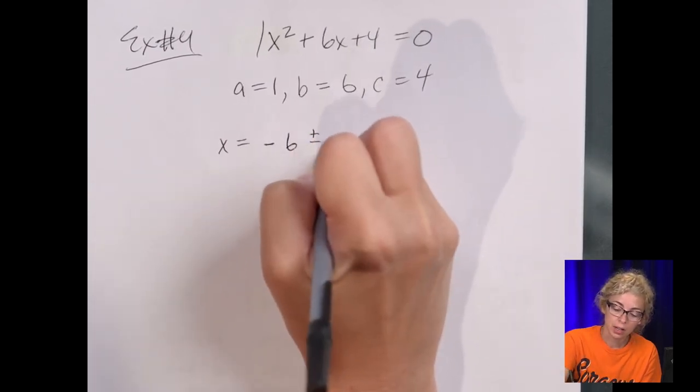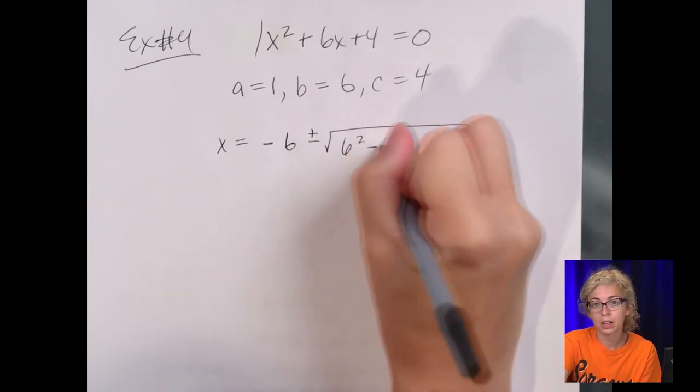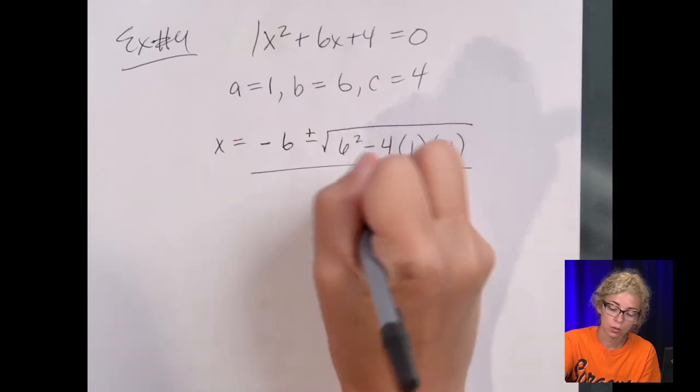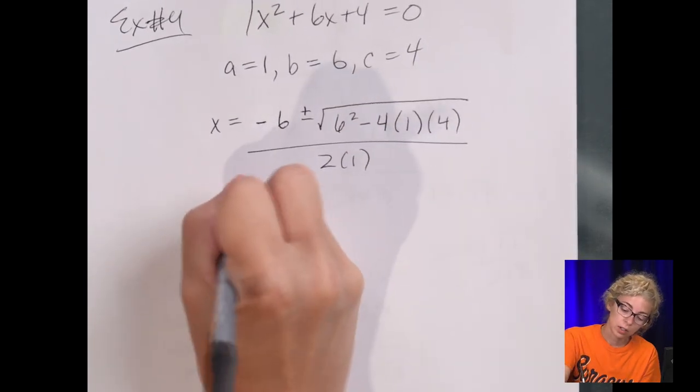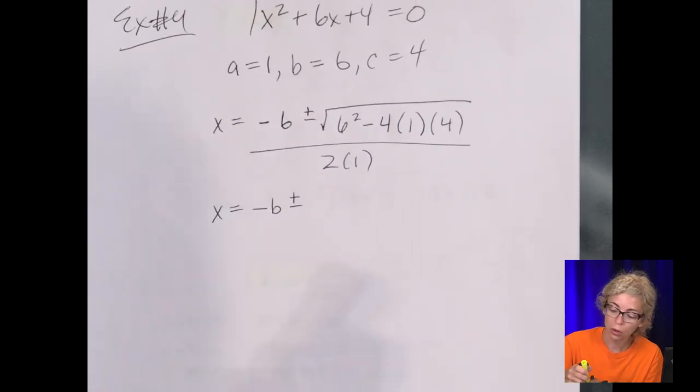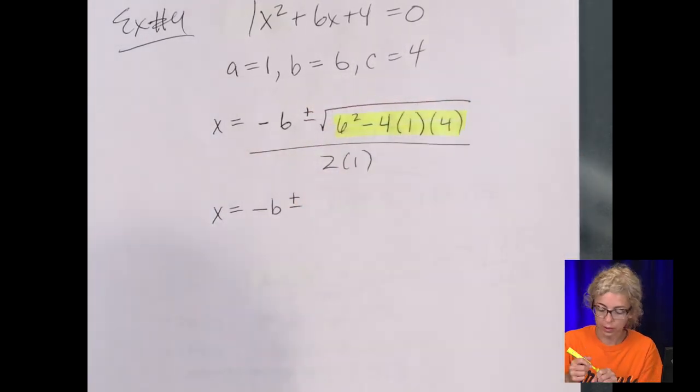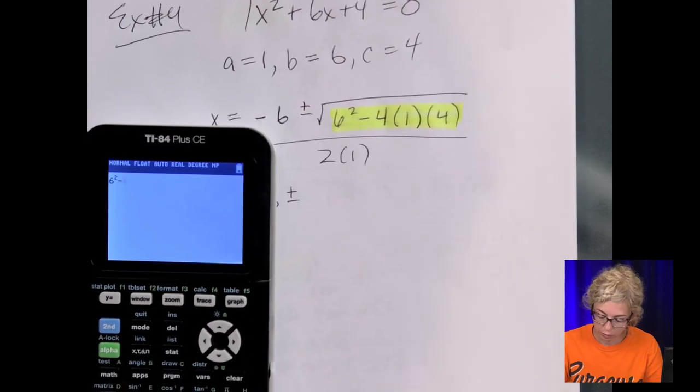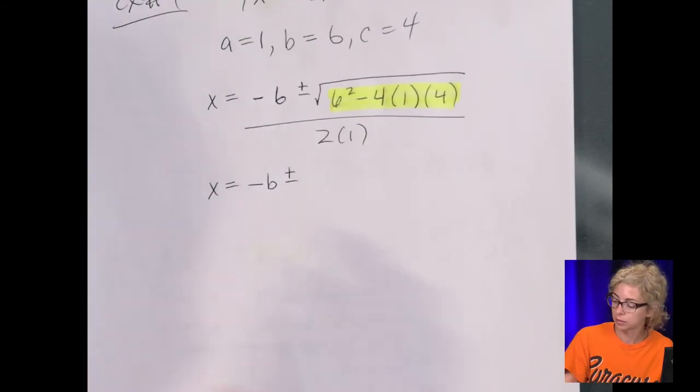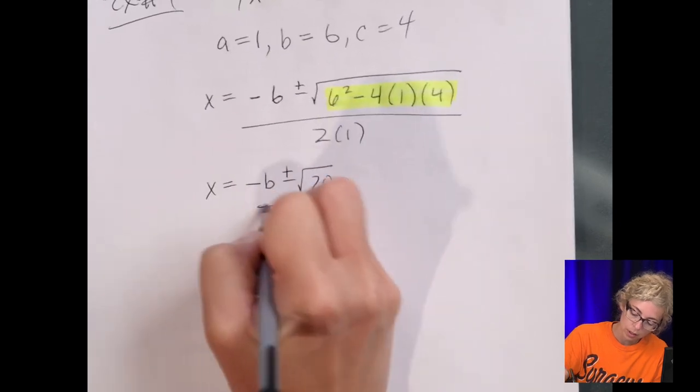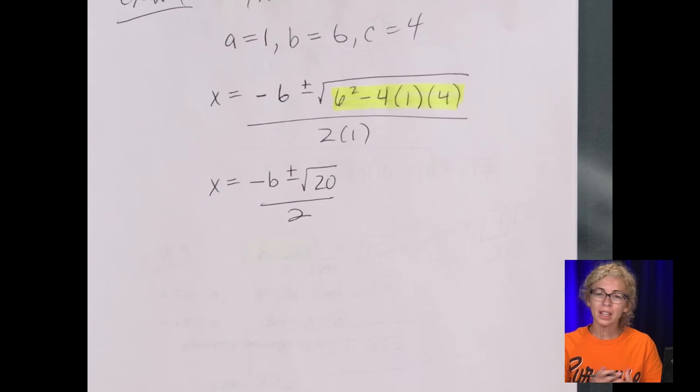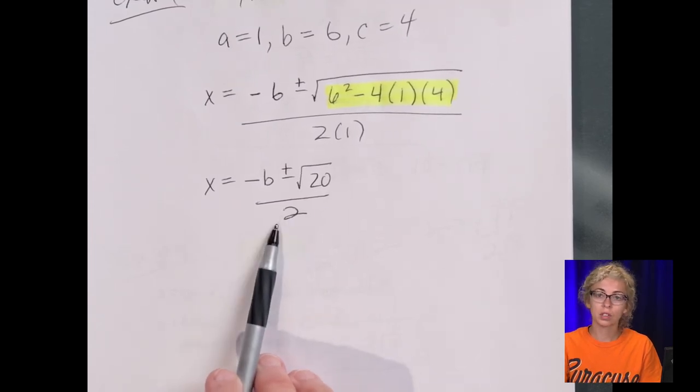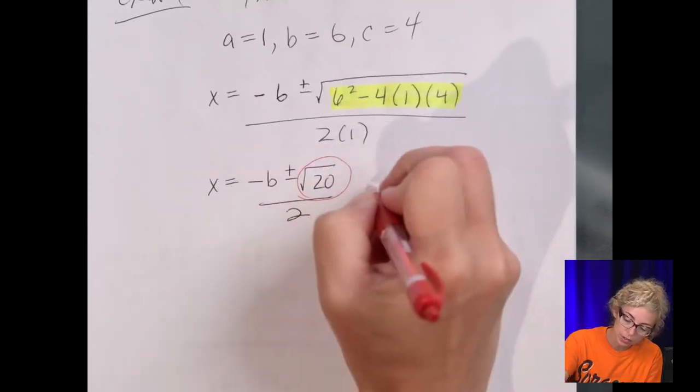So it's x equals negative b, so negative 6, plus or minus b squared, so 6 squared minus 4ac. So 4ac, no symbol, means multiplication. So 4 times 1 times 4, all over 2a. So our answer is negative 6 plus or minus. Type this whole line in under your calculator. So 6 squared minus 4, parentheses 1, parentheses 4, and we get 20. All over 2. Now, if it wanted the answer in decimal form, we could type this whole thing in and get the two decimals. It might also say in simplified form. So, again, we have to look at the radical, and off to the side, I like to simplify it.